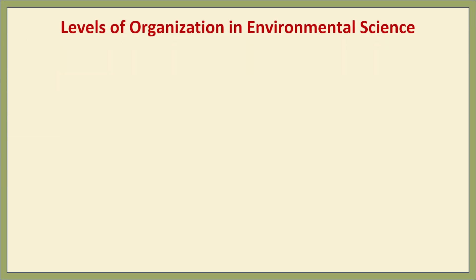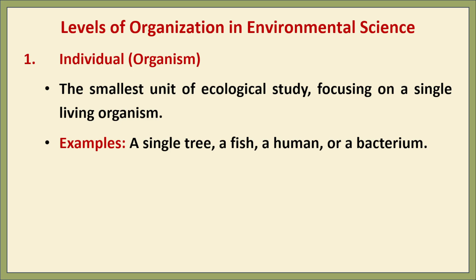The next topic is levels of organization in environmental science. The first level is the individual, or organism — the smallest unit of ecological study, focusing on a single living organism, whether a plant, animal, or microbe. Examples include a single tree, a fish, a human, or a bacterium. At this level we study how an organism survives, grows, and adapts to its environment.